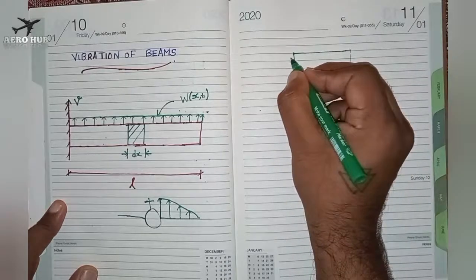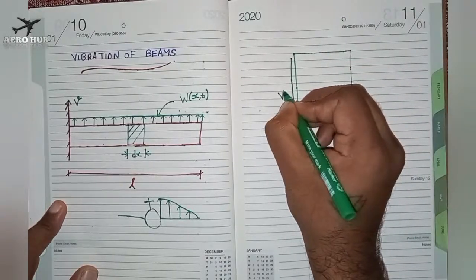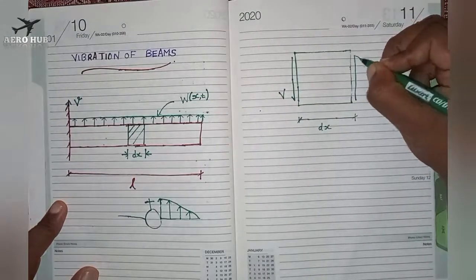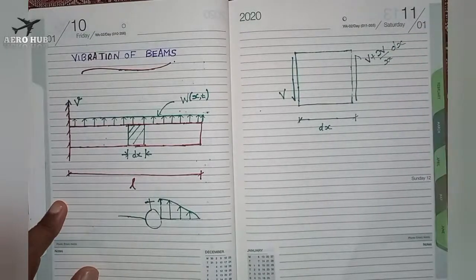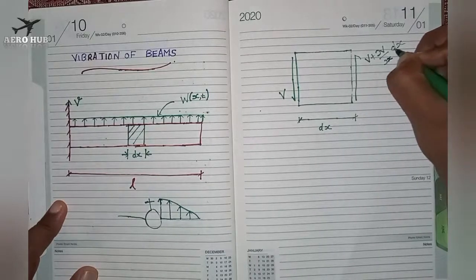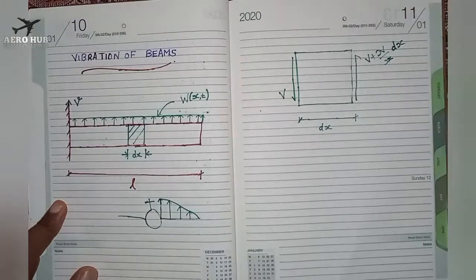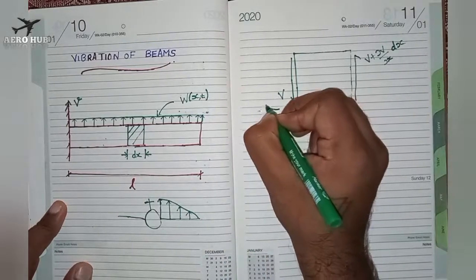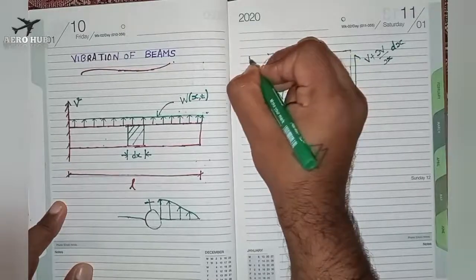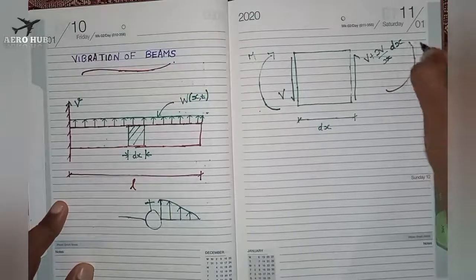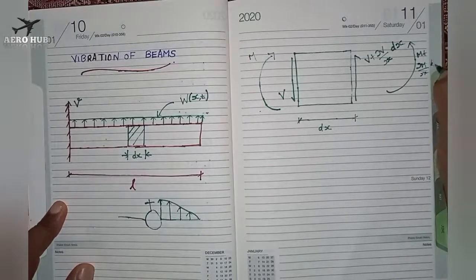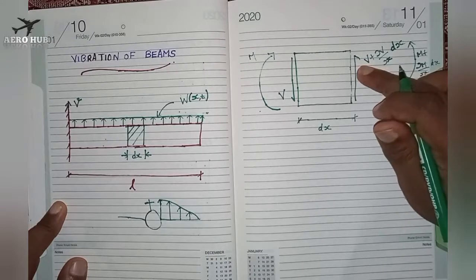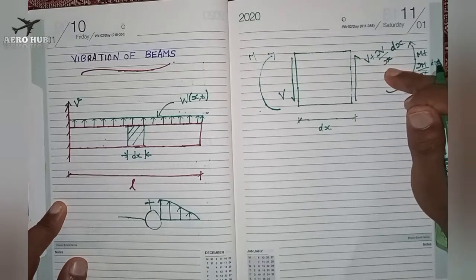I have a shear force acting in one direction as capital V, and on the other face it will be V plus (∂V/∂x)·dx. Similarly, we have a moment acting on one side as capital M, and on the other side it will be M plus (∂M/∂x)·dx. V is the shear force, and ∂V/∂x is the rate of change of shear force.